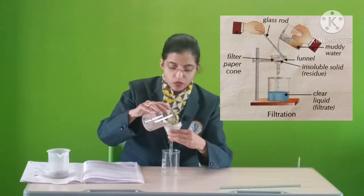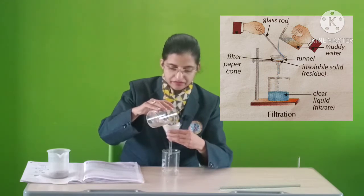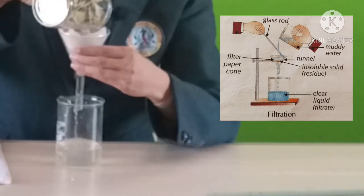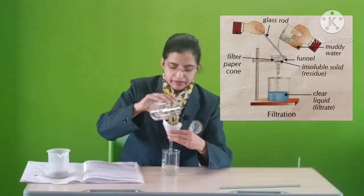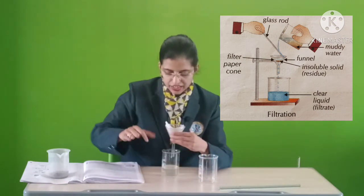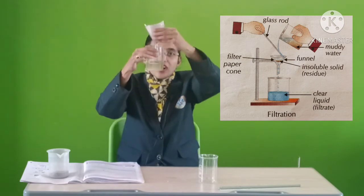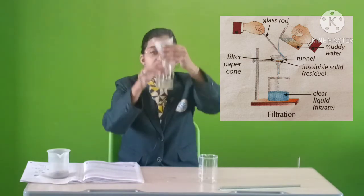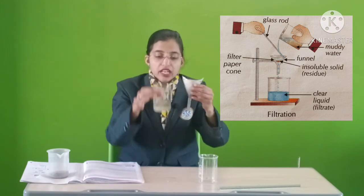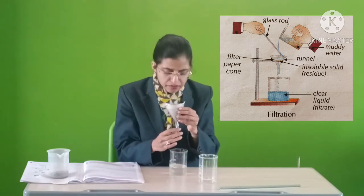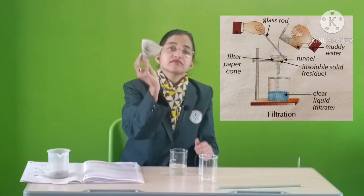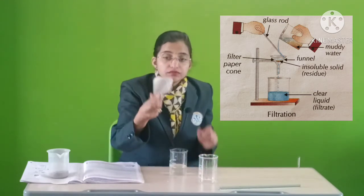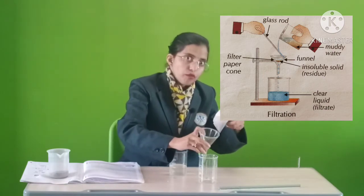I am getting clear water from the mud water. I got clear water from the mud water. This water which we got is known as filtrate — the water we got after filtration. And I got many impurities here inside the cone. All these things — this mud — is known as residue.